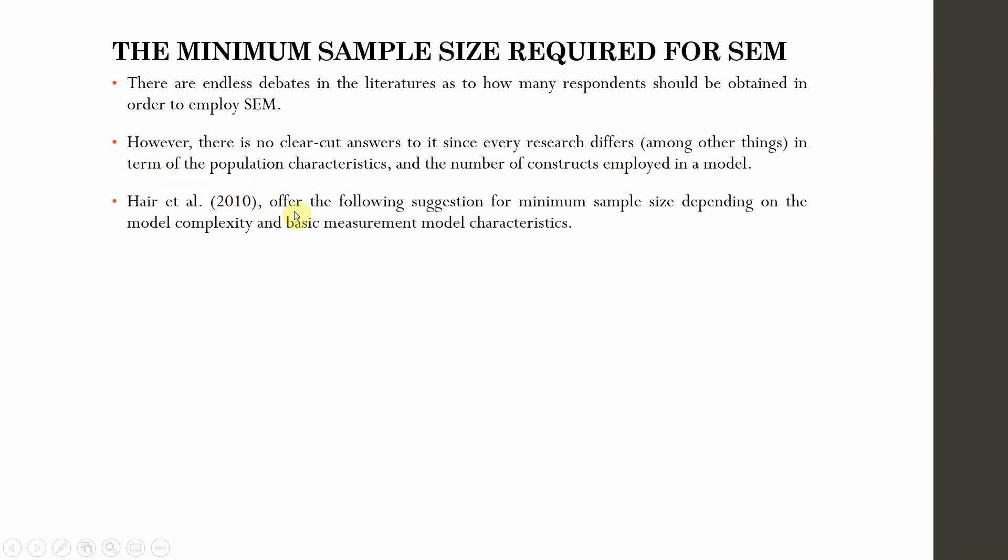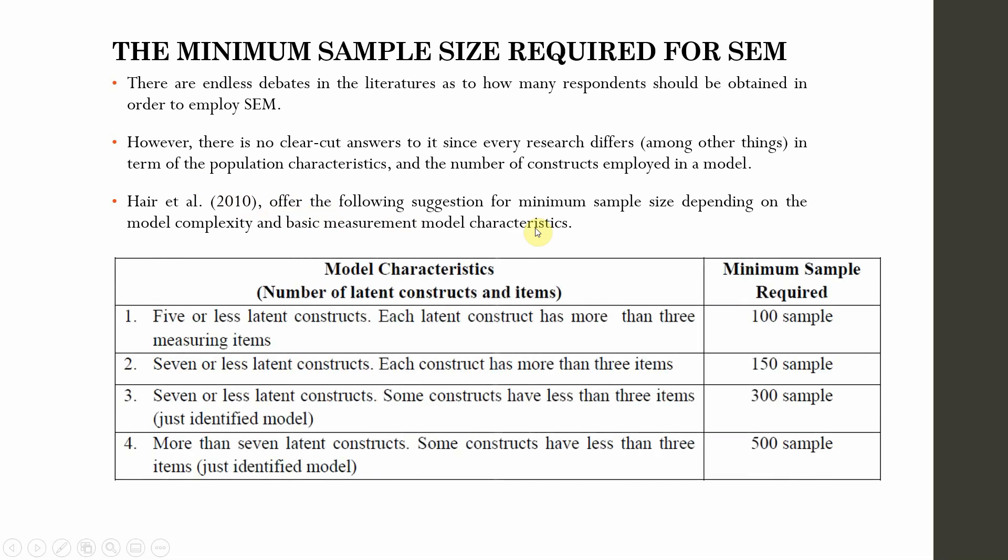Hair et al. in 2010 offered the following suggestions. You've got five or less constructs, each construct has more than three measuring items, you need 100 sample. Seven or less latent constructs, each construct has more than three items, you need 150.